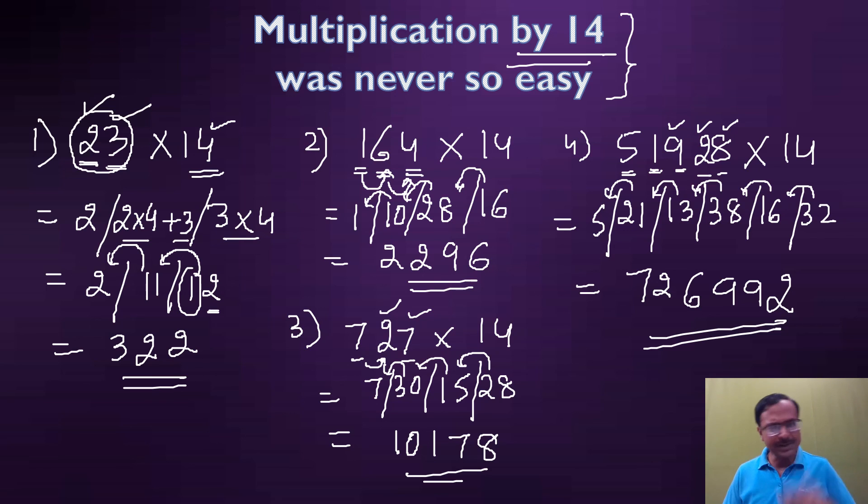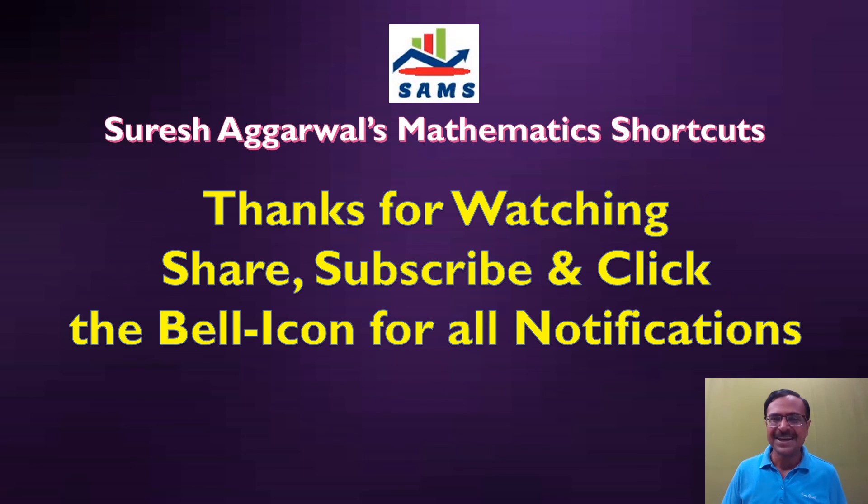Friends, pick up the calculators and check whether I'm doing it correctly or not. You are going to find this very accurate. Try using 6 digits, 7 digits, 10-digit numbers to be multiplied with 14, and you will get the correct answer every time if you apply this properly.